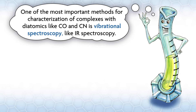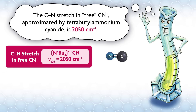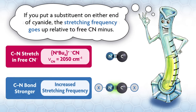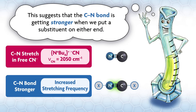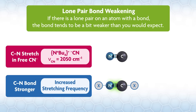Finally, one of the most important methods for characterization of complexes with diatomics like CO and CN is vibrational spectroscopy like IR spectroscopy. A CN stretch in free CN⁻, approximated by tert-butyl ammonium cyanide, is 2050 reciprocal centimeters. If you put a substituent on either end of the cyanide, the stretching frequency goes up relative to free CN⁻, suggesting the CN bond is getting stronger. This is due to what's been called lone pair bond weakening, a term coined by Sanderson and eventually explained by Voltron, Heberti, and other workers.